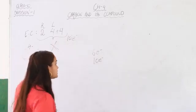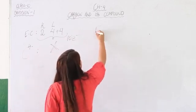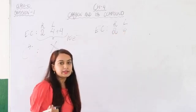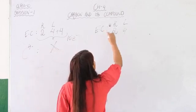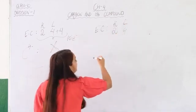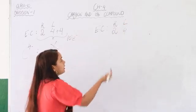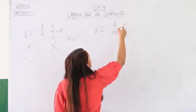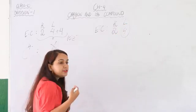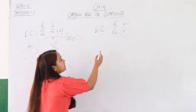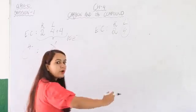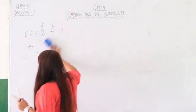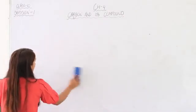Now let us see what happens if carbon gives away its 4 electrons. Looking at the electronic configuration K and L: there are two stability rules — octet and duplet. If carbon loses its 4 electrons it would be left with only 2 electrons, attaining duplet stability. However, carbon does not have enough energy to donate all 4 electrons at once. Since carbon does not have sufficient energy to donate 4 electrons, this option is also not applicable. So donating and accepting electrons permanently is not possible for carbon.